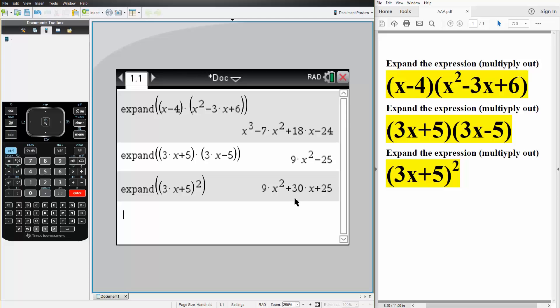9x squared plus 30x plus 25. And that's how we can expand or multiply two expressions using the TI-inspire.